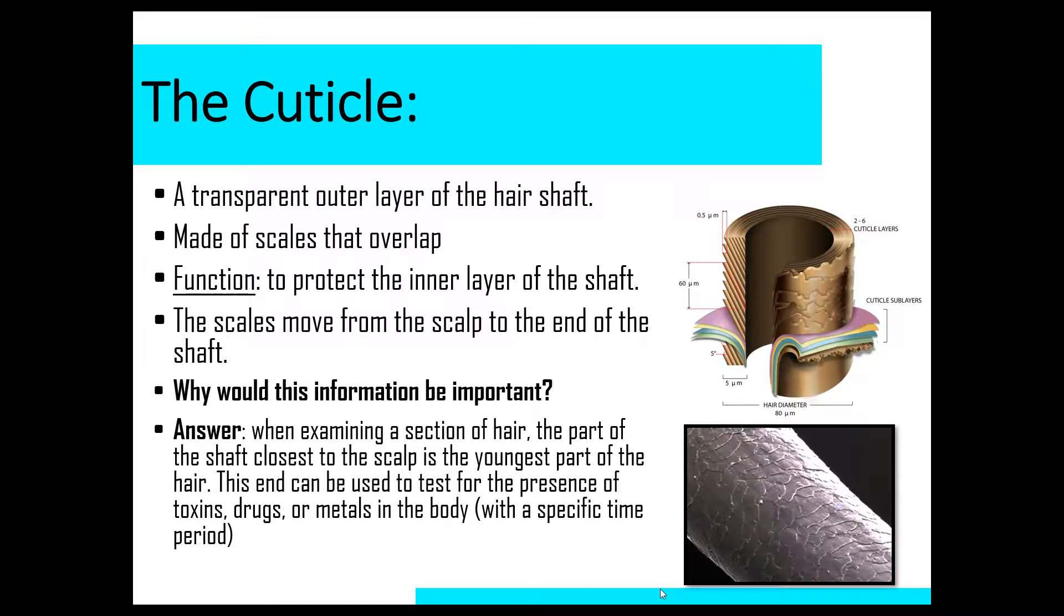Starting with the cuticle. The cuticle is a transparent outer layer of the hair shaft. So it doesn't have any color, transparent. Its main property is to just protect the cortex and the medulla. The cuticle is made of different scales that overlap, and those scales move from the scalp to the very end of the hair shaft. Now you might think, why is that important? Well, when investigators examine hair, the part of the shaft that's closest to the scalp is the youngest part of the hair. So if somebody dies under suspicious circumstances and they may suspect that they were poisoned or exposed to some sort of drugs or toxins that may have resulted in their death, they can use different hair samples and test those hair samples using a process called neutron activation analysis to test for the presence of these toxins and drugs and other metals. So that can be important information.